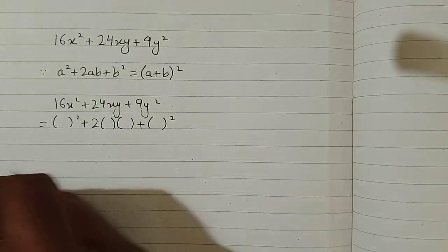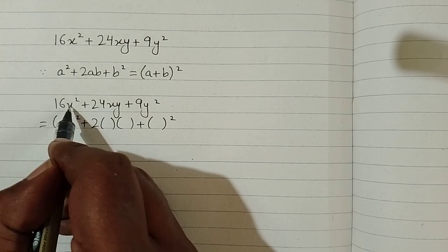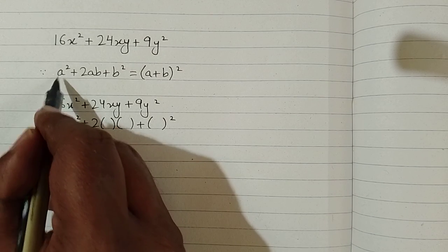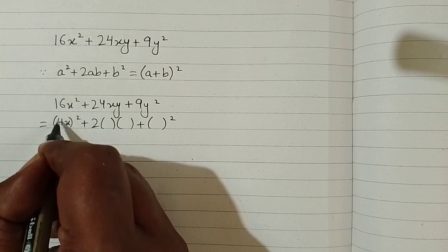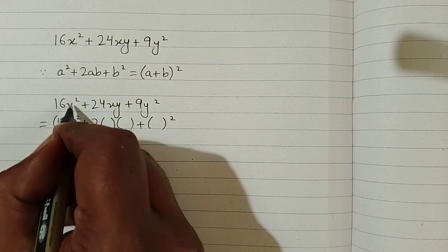We have 16x² in place of a², so the value of a is 4x because the square of 4 is 16 and the square of x is x².